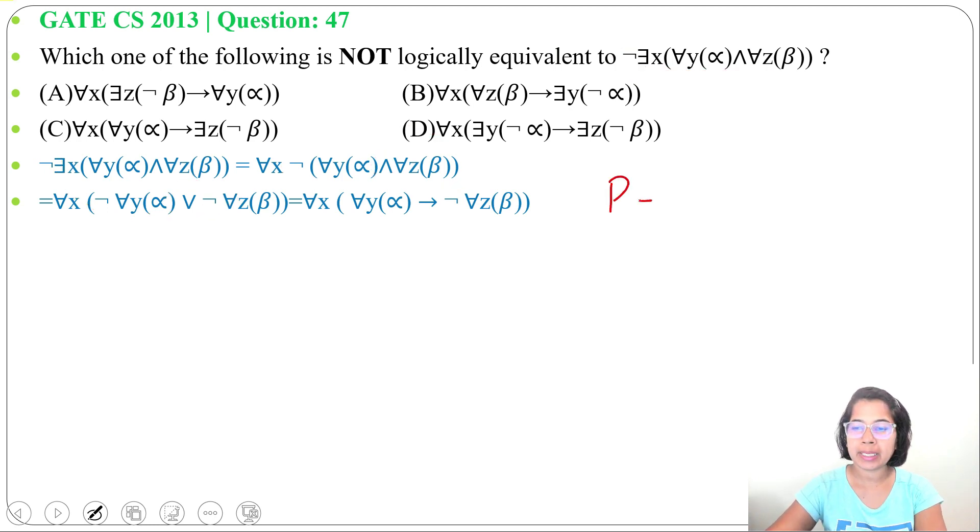And we know P implies Q is equivalent to negation of P or Q. So just consider for all Y, alpha as P and negation of for all Z, beta as Q.